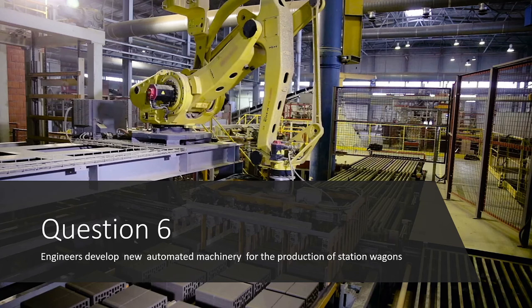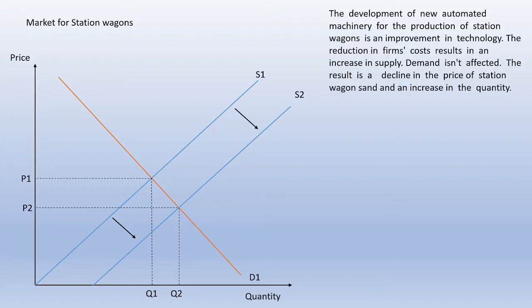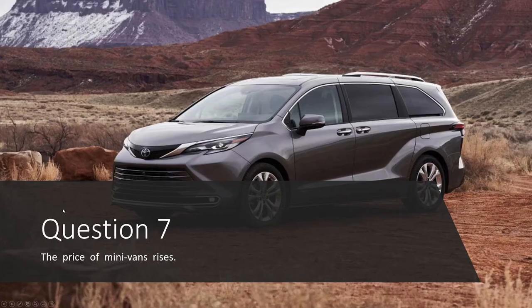Question six: engineers develop new automated machinery for the production of station wagons. This should ring bells — it's related to the supply curve. More efficient and cheaper production means the supply curve shifts right; we can supply more at any given price. This is an improvement in technology that reduces the firm's costs and increases supply; demand is unaffected. The result is a decline in the price of station wagons and an increase in quantity — the supply curve shifts right and we intersect demand at a lower price and higher quantity.